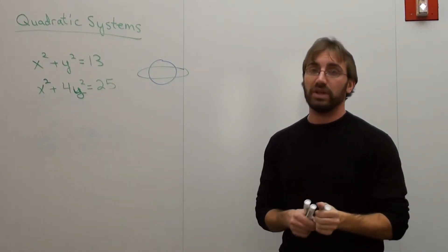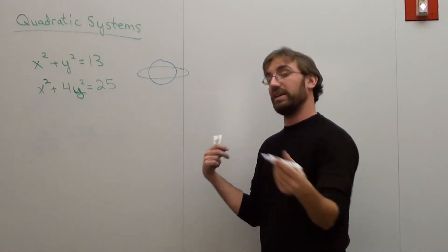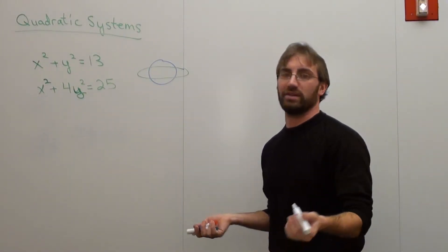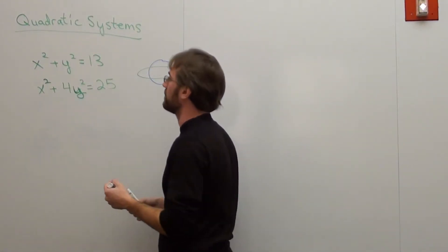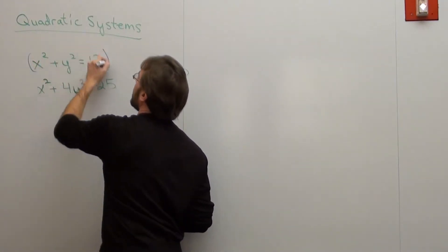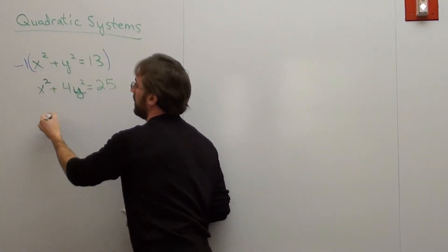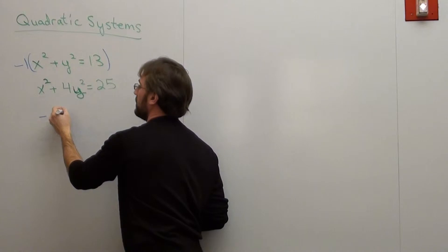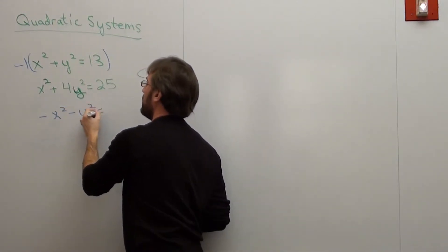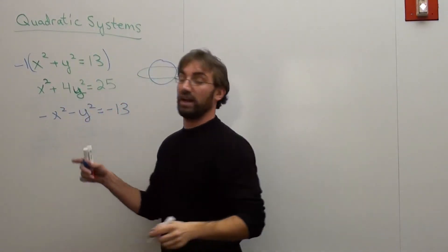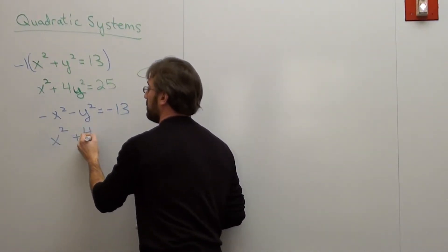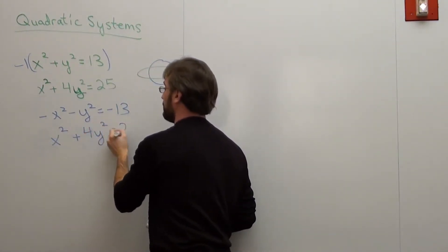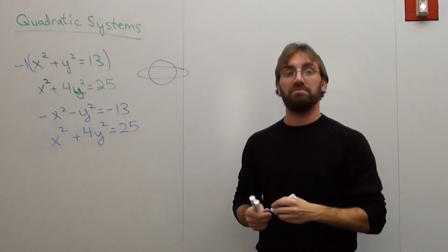So, I have x squared plus y squared equals 13 and x squared plus 4y squared equals 25. What I can do is multiply one of these by negative 1. Technically, you could just subtract them too. I'm well aware of that. But I'm going to multiply one of these by negative 1 so I can cancel out one of the terms. If I multiply this by negative 1, then I'll have negative x squared minus y squared equals negative 13. And then I'll have x squared plus 4y squared equals 25. Bam!